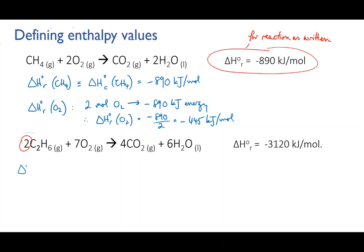Well, two moles of ethane produces 3,120 kilojoules of energy when it reacts. So the enthalpy of combustion of ethane is 3,120 divided by 2, which is minus 1,560 kilojoules per mole of ethane. And if we wanted to know the enthalpy of reaction relative to the oxygen, we could easily calculate that also.